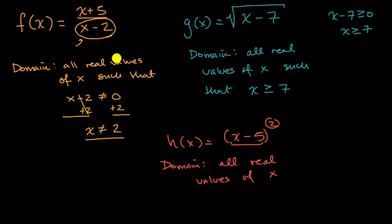The other two examples required constraints. When you deal with something in a denominator that could equal zero, you have to make sure that doesn't happen because it gives an undefined value. Similarly, for a radical, you can't take the square root of a negative, so we have to constrain on that as well.